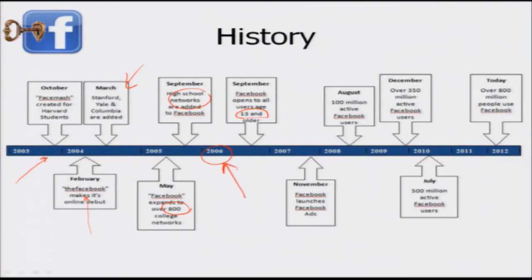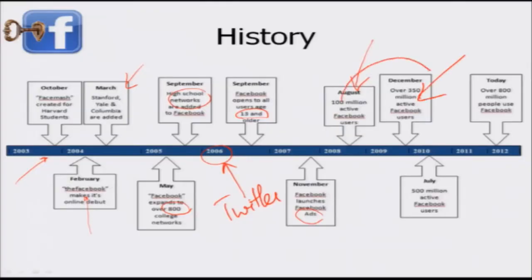By 2006, Facebook was among the older social networks — Twitter, for example, came into being only around this time. In November, Facebook advertisements came up. By August 2008, Facebook had crossed 100 million active users, including many middle-aged users, which was a huge success. By December it was 350 million — a huge jump between 2008 and 2009. In July 2010, 500 million active users, and by 2012, 800 million-plus people were using Facebook.